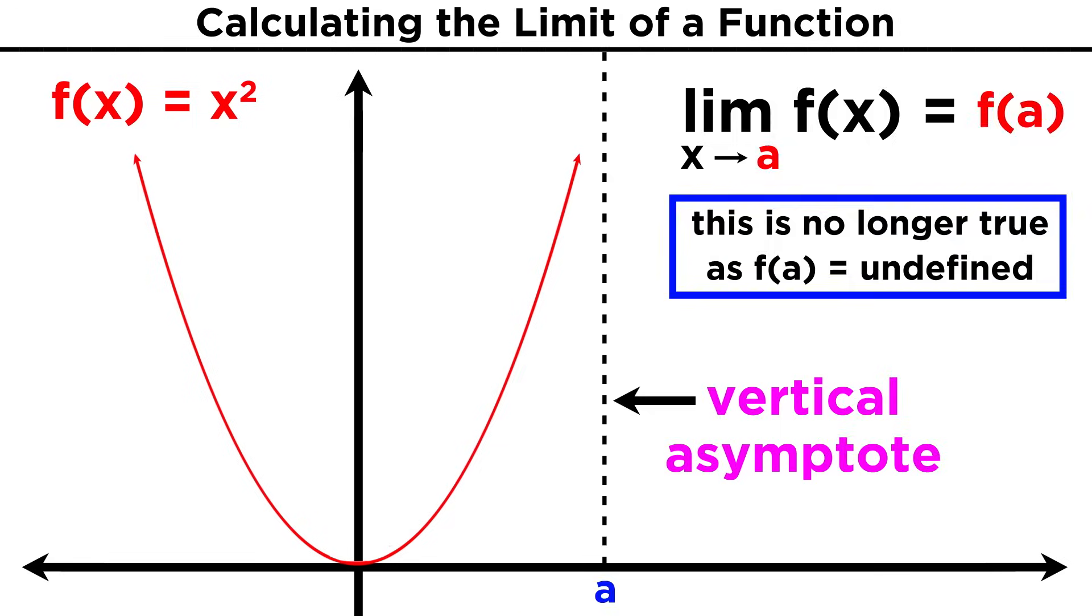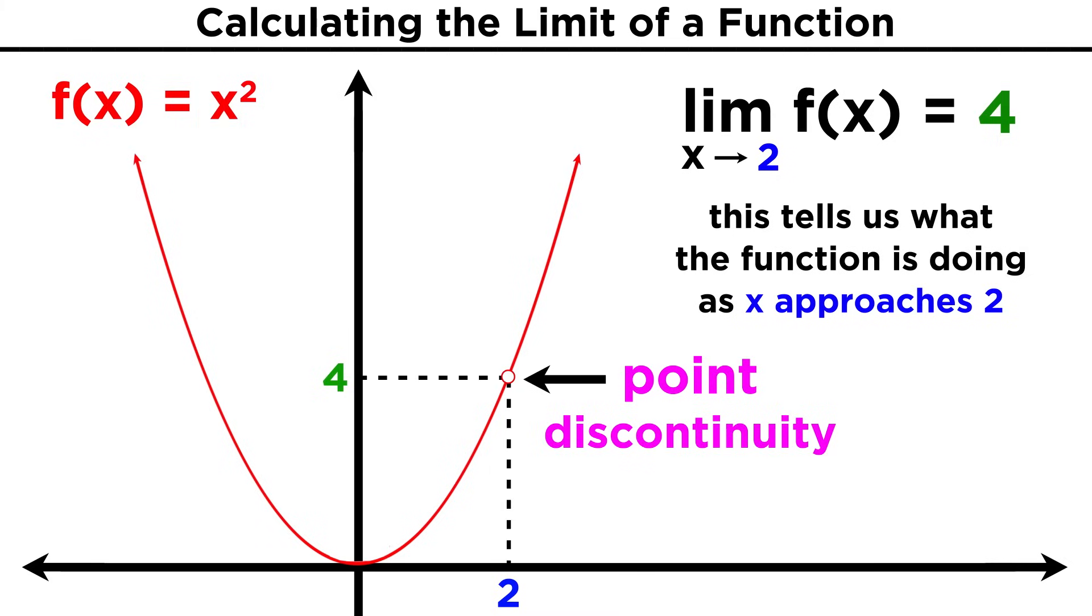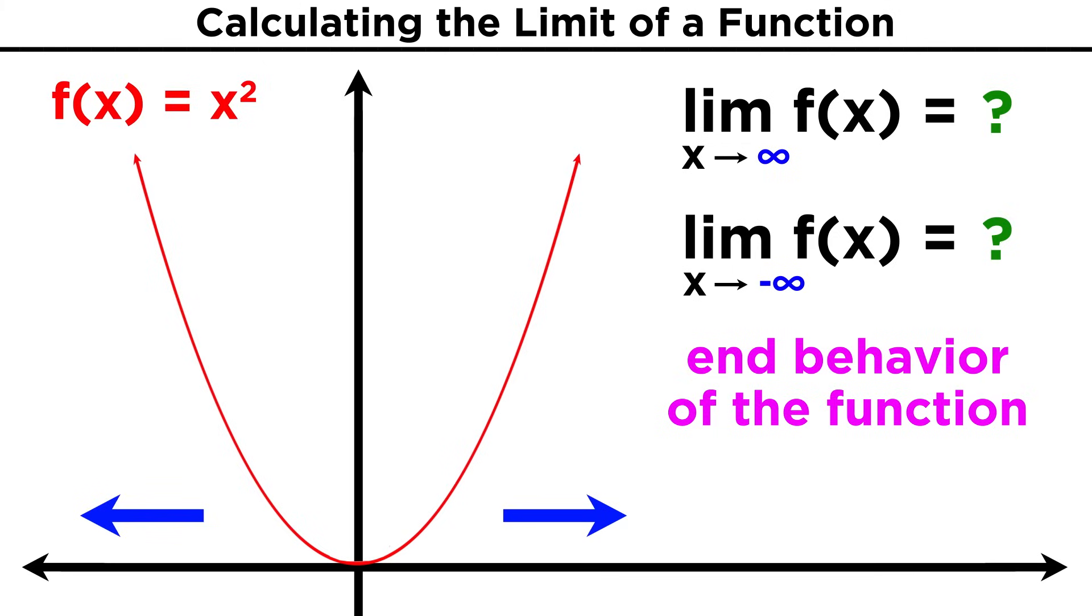In other cases, perhaps there is no asymptote, but there is a point discontinuity. Let's remove the point from our previous example. Now what we've described about the limit of the function as x approaches two is no different than what we had before, even though the function no longer equals four at x equals two. This is because the function still does the same thing as we approach two from either direction. Similarly, we may want to know about the end behavior of a function as x proceeds infinitely in either direction, and it may not always be obvious from looking at the function in equation form. So this is the realm where limits have their application.